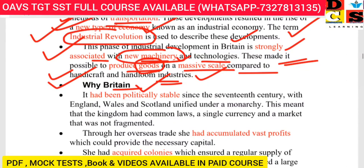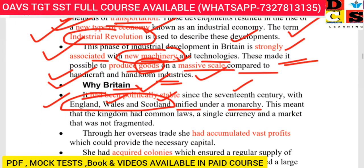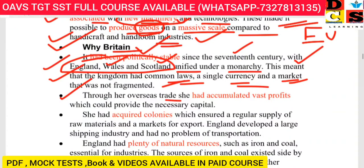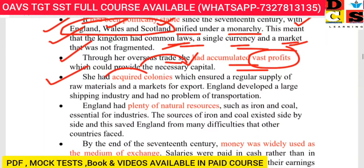Britain had been politically stable in the 17th century and had been unified under the monarchy as Great Britain. This meant the kingdom had a common law, a single currency and market. Through overseas trade, Britain accumulated vast profits, providing the necessary capital. It had also acquired colonies, ensuring a regular supply of raw materials and markets for exports.